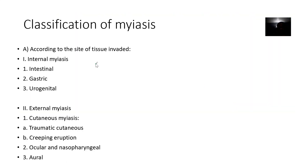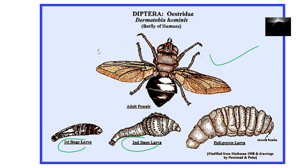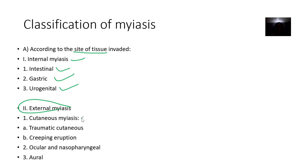Looking at the classification of myiasis, you can classify it according to the tissue affected — basically the site of tissue affected. You have internal myiasis, which could be intestinal, gastric, or urogenital. Then we have external myiasis, which is on the surface. Cutaneous myiasis can result from traumatic cutaneous or creeping eruption.